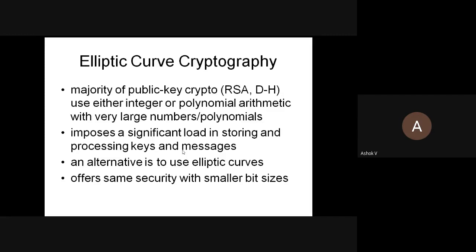Public key will be known to everyone and private key will be known to the specific person. The sender encrypts the message using the receiver's public key and sends it to the receiver. The receiver can decrypt the message using their own private key, not the public key.